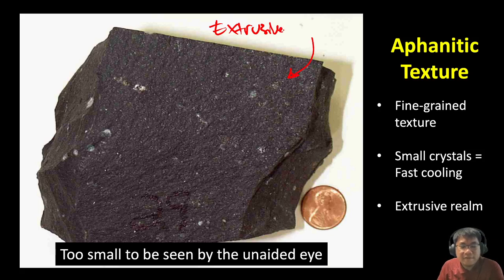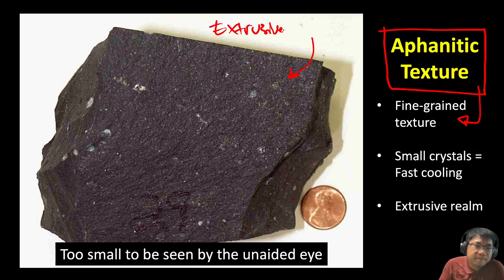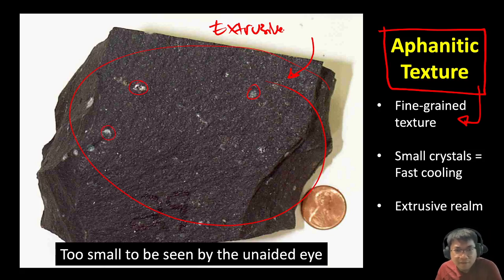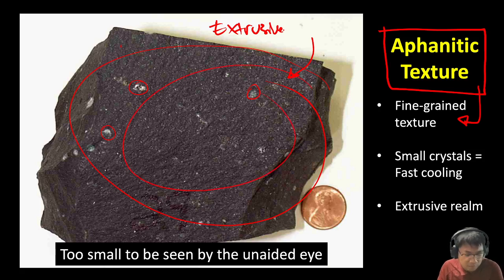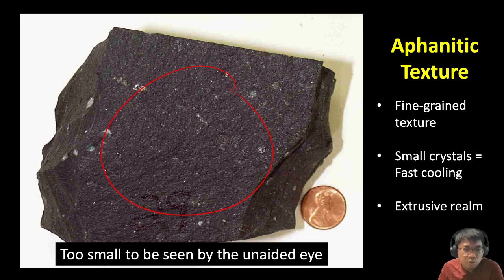This extrusive rock is called basalt, and basalt has a very distinctive texture called aphanitic texture. Aphanitic texture means a very fine-grained texture. As you can see, some light minerals may be identifiable with our naked eyes, but most of the darker-colored minerals in this rock are so small and so fine that our naked eyes cannot distinguish between them. These minerals are just too small to be seen by our eyes — that's what we mean by aphanitic texture.